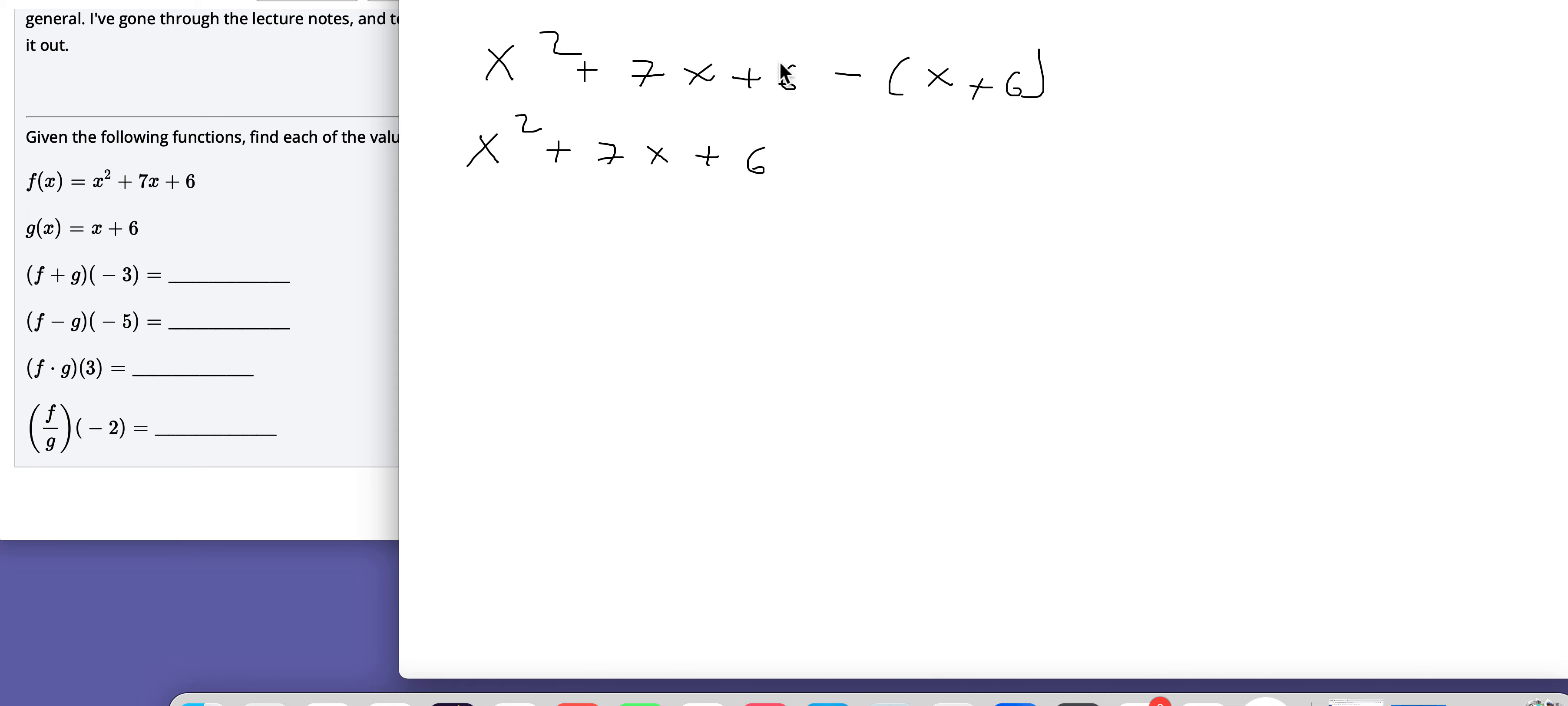Plus 6. And then that negative is going to distribute through. Minus that will make a minus 6. So that's going to leave me X squared. 7X minus X would be 6X. And then plus 6 minus 6. Those cancel. So now this is the result of F minus G.